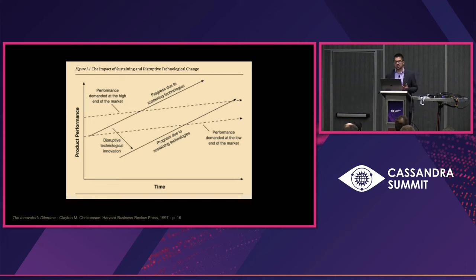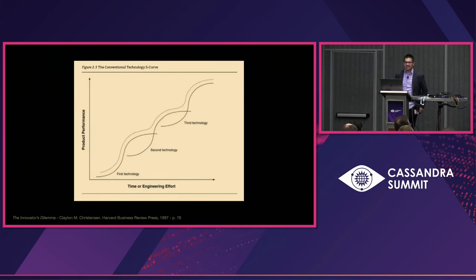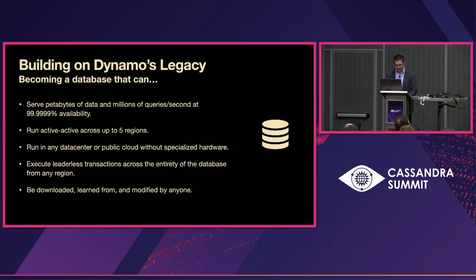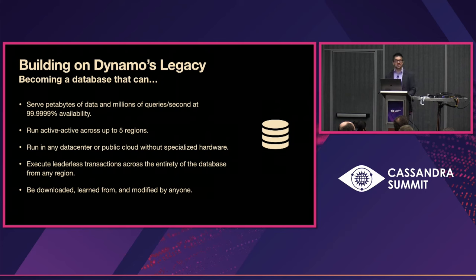We've come back to our frame — a cycle in which disruptive innovation slowly moves upmarket after carving out a niche and gaining new capabilities while building an impenetrable moat around core competencies like scalability and availability. But the news isn't all good, because once you reach the top, there's usually another technology maturing right behind you. Some example moats for future databases might include hard multi-tenant isolation, making exceptional use of tiered or disaggregated storage, or full SQL support. We should be really proud of what the Dynamo architecture has enabled us to build: a database serving petabytes of data and millions of queries per second with up to six nines of availability, replicating active-active across five regions, deployable in any data center or public cloud without specialized hardware, executing leaderless transactions across the entirety of the database from any region, and one that can be downloaded, learned from, or modified by anyone. That's a great foundation to build on.